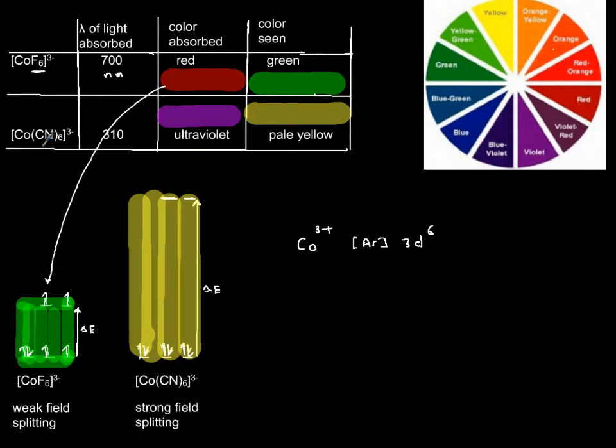Now, if you swap the ligands with cyanide in terms of cobalt 3+, it's going to absorb ultraviolet 310 nanometers because it causes the biggest splitting.